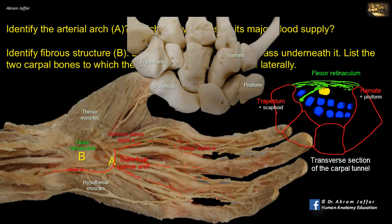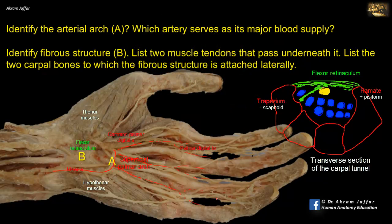The structures passing through the carpal tunnel — deep to the retinaculum — are the tendon of flexor carpi radialis in its own compartment, flexor pollicis longus, the four tendons of flexor digitorum superficialis, and the four tendons of flexor digitorum profundus. The median nerve also lies beneath the retinaculum, which is why it may be entrapped and compressed by the crowded contents of the tunnel, resulting in carpal tunnel syndrome.